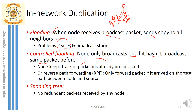A second solution is reverse path forwarding. When node 3 receives a packet from node 4, it calculates the shortest path back to the source node 1. For node 3, the shortest path to reach node 1 is via node 2. For node 4, the shortest path to node 1 is also via node 2. When node 1 sends a packet to node 2, node 2 calculates the shortest path back to the source — which is a direct path — and accepts the packet.